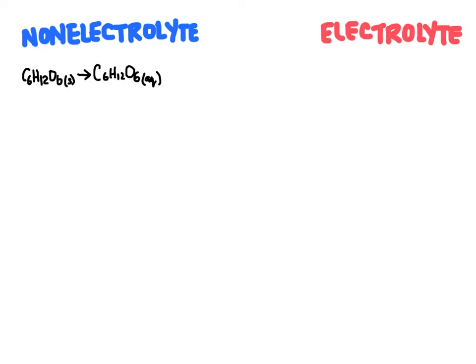Now with an electrolyte, we're generally going to have an ionic compound. So this is calcium chloride, and I know it's ionic because it has a metal and a non-metal. When this dissolves, it's going to split apart into its different ions. Glucose does not split apart because it's a molecule bonded covalently — all non-metals. Calcium chloride has metals and non-metals, so there are ions connected to each other.